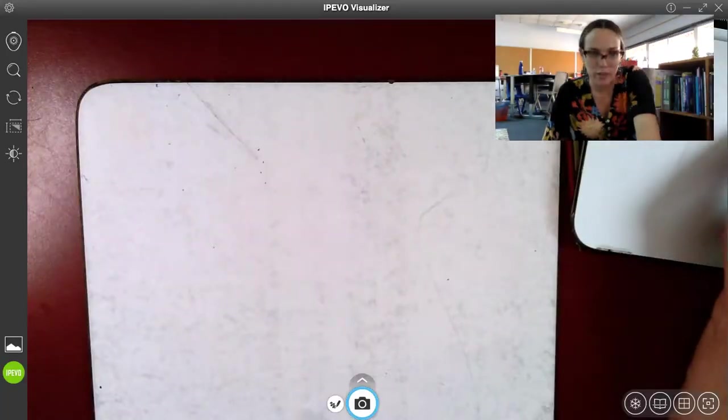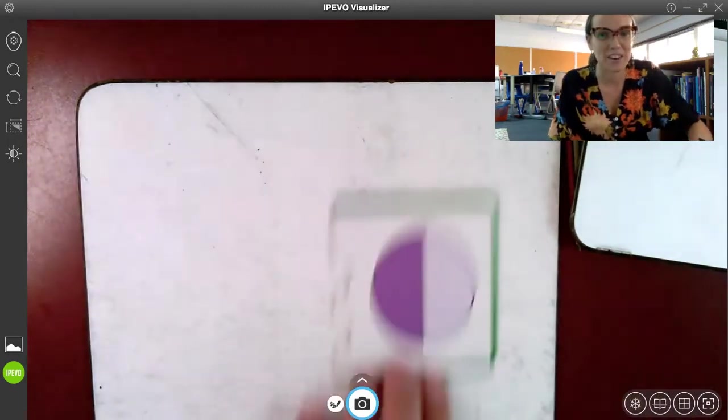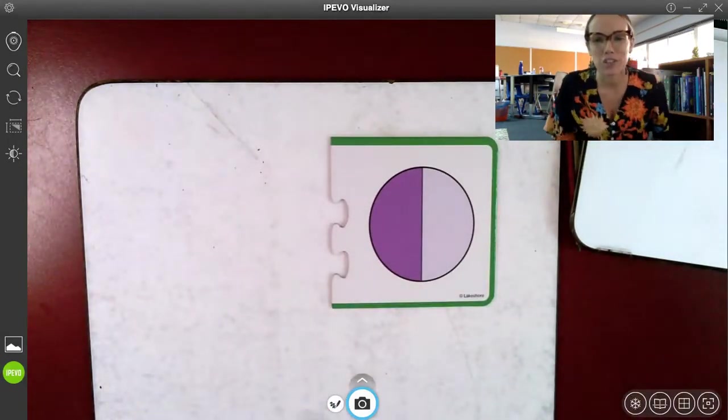So we're going to do a quick review. Then we're going to talk about how area models can be equal to each other, even if they don't look exactly the same. Then we're going to do a little bit of practice, and then you will do your exit ticket on your own. Let's go ahead and get started with our warm-up reviewing area models. We're going to start with some fraction puzzle things. So here we're going to start easy. Tell me, what is the fractional name of this shape?